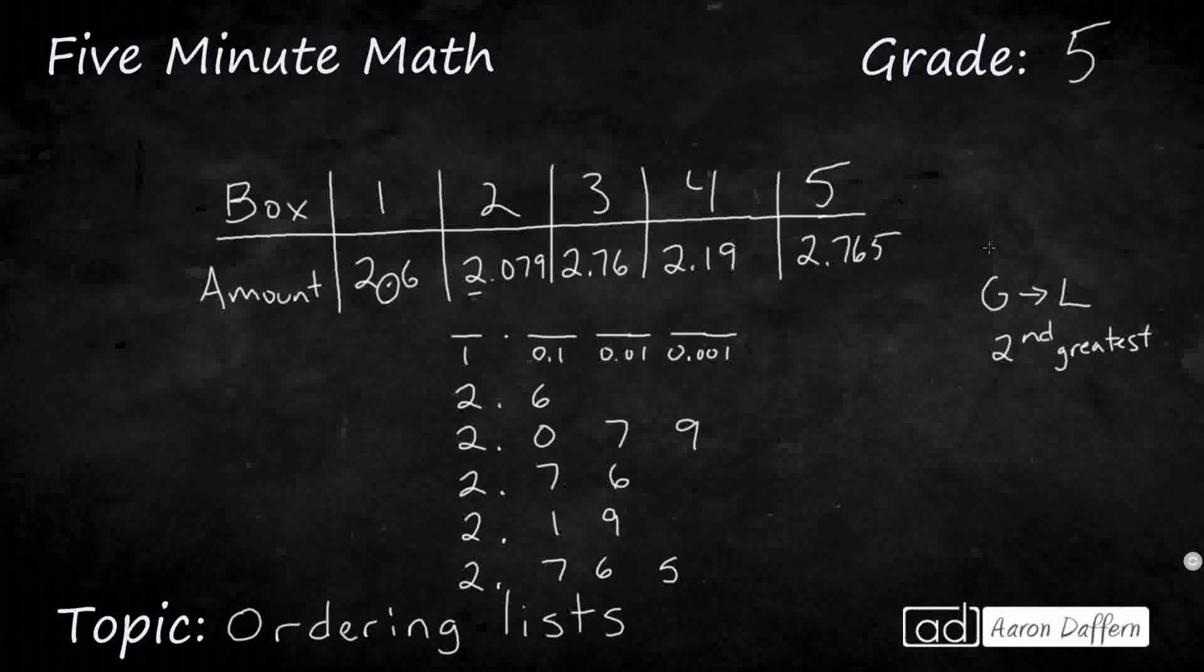So if we want to compare these, the ones places where we would start, it's not going to do as much good, because they're all a two. If one of them was not a two, then we could use that, so we go to our next place value. But one thing I always suggest is if you're ordering a list like this, before you start comparing them, fill in any blanks with zeros, because 2.6 is the same as 2.60 hundredths, is the same as 2.600 thousandths. And then 2.19 hundredths is the same as 2.190 thousandths.